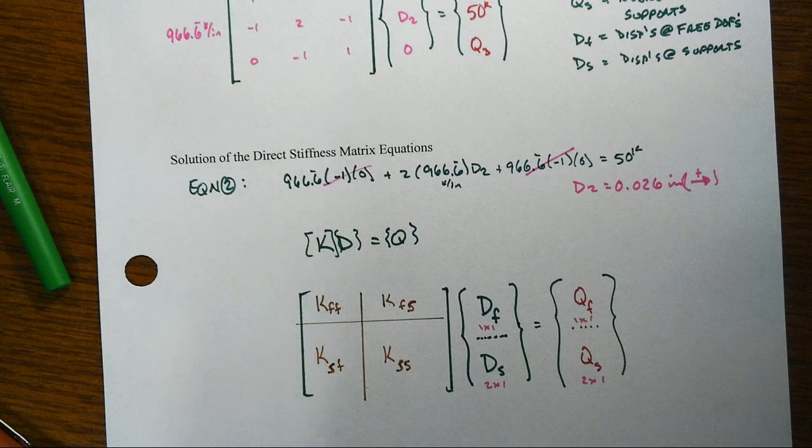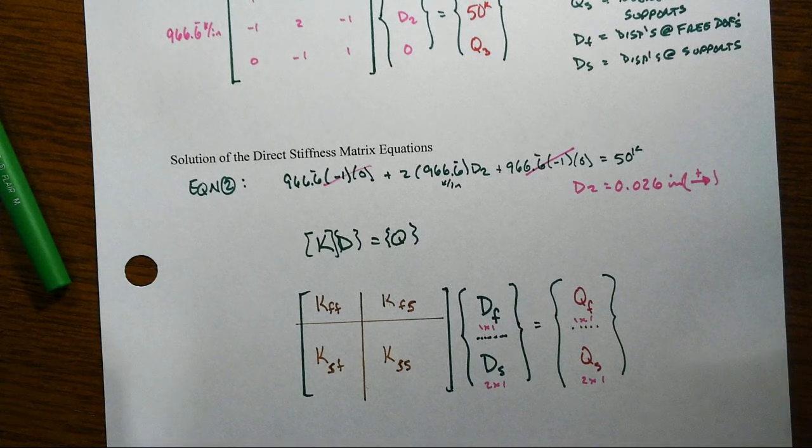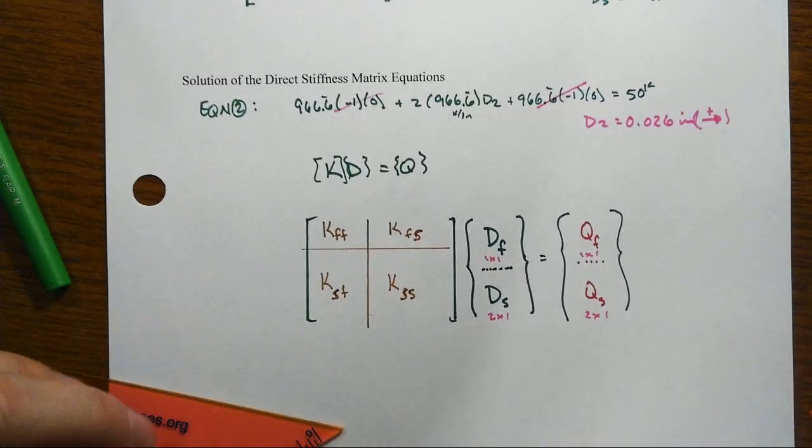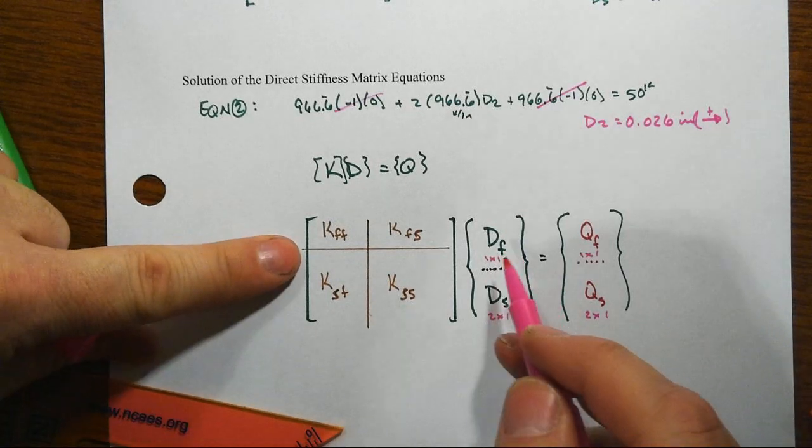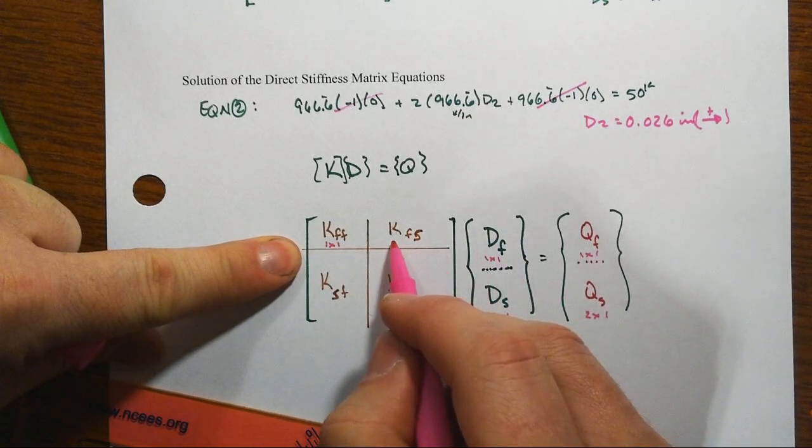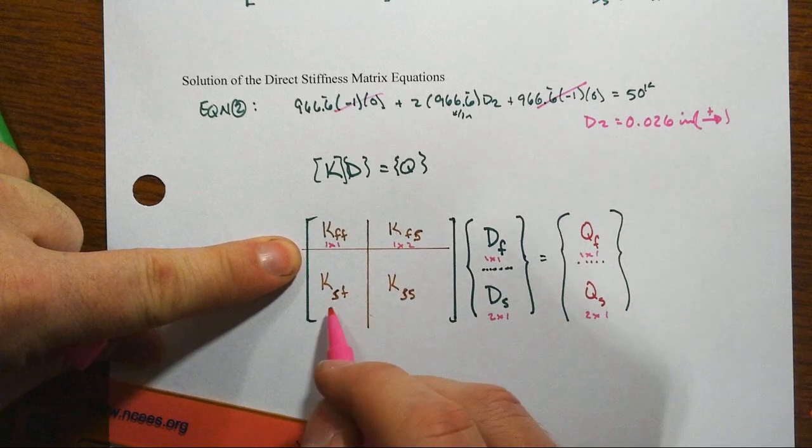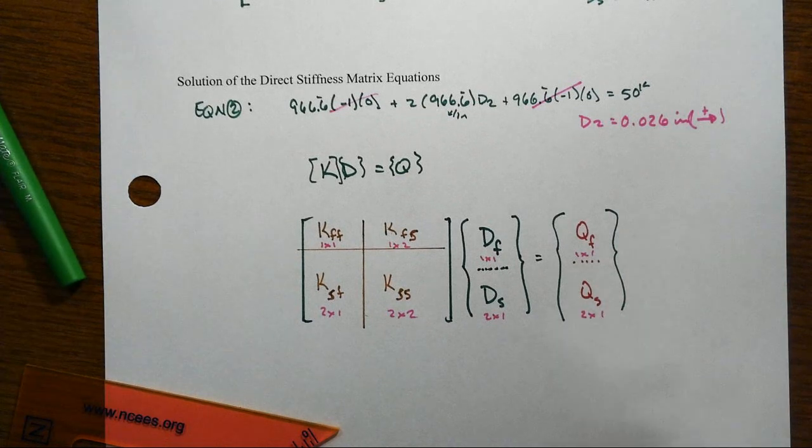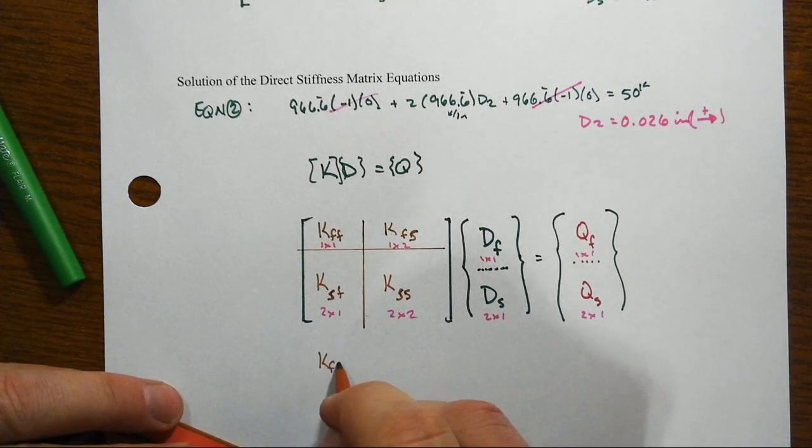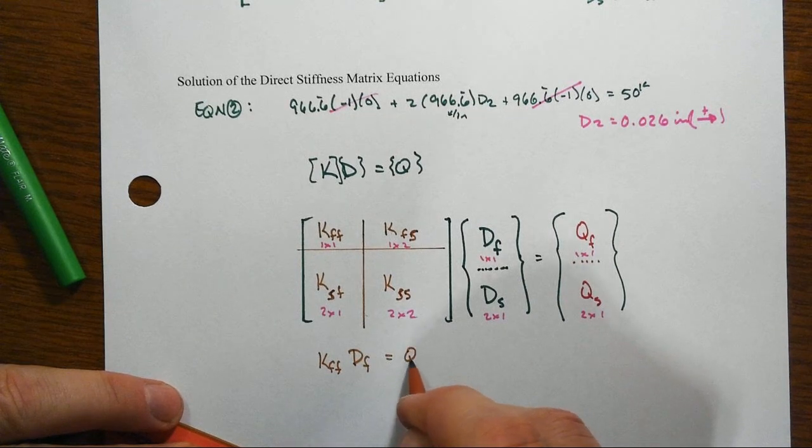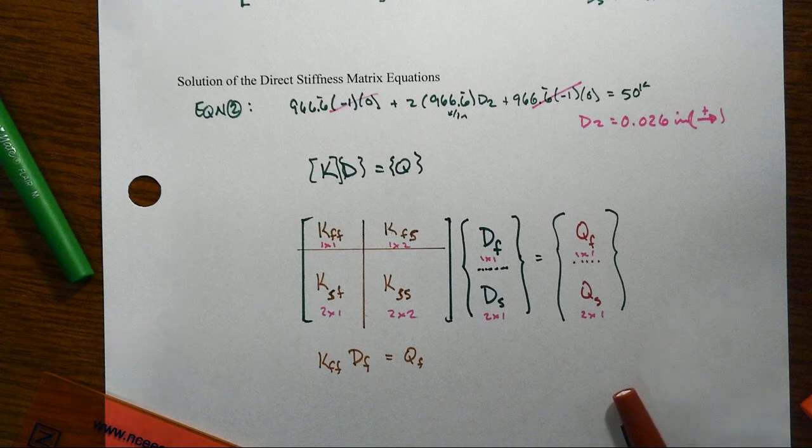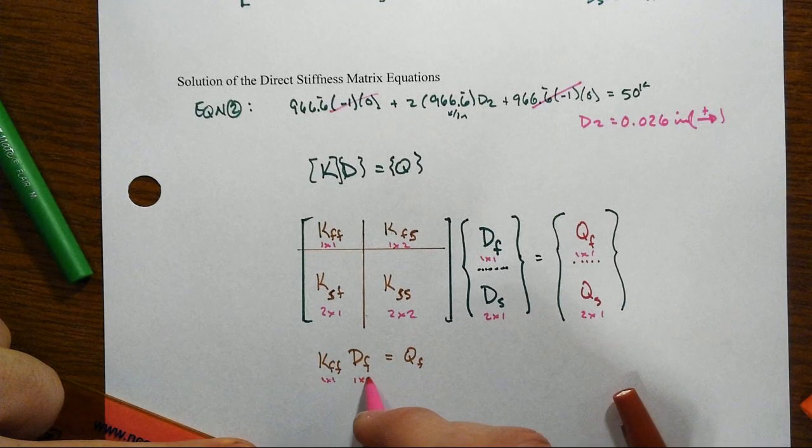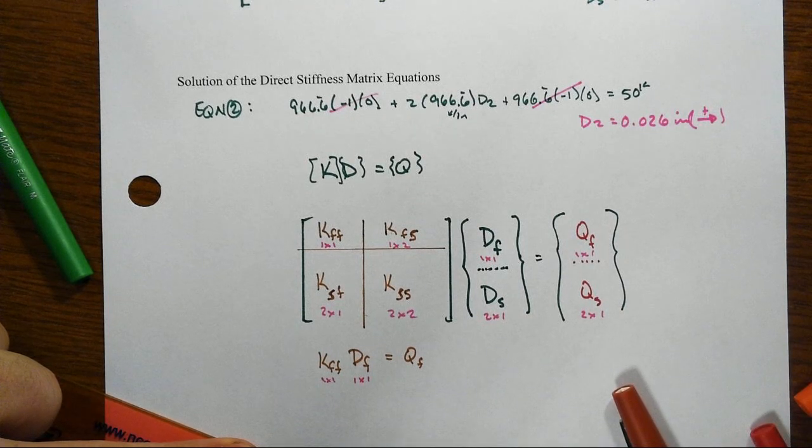Either one works. Notice what you end up with: that matrix manipulation-wise, this has to be a 1 by 1, this has to be a 1 by 2, this is a 2 by 1, and a 2 by 2. Note how this is going to work out: KFF times Df is going to equal Qf. In this case, it's just a simple 1 equation, 1 by 1 times a 1 by 1. What did I do there?